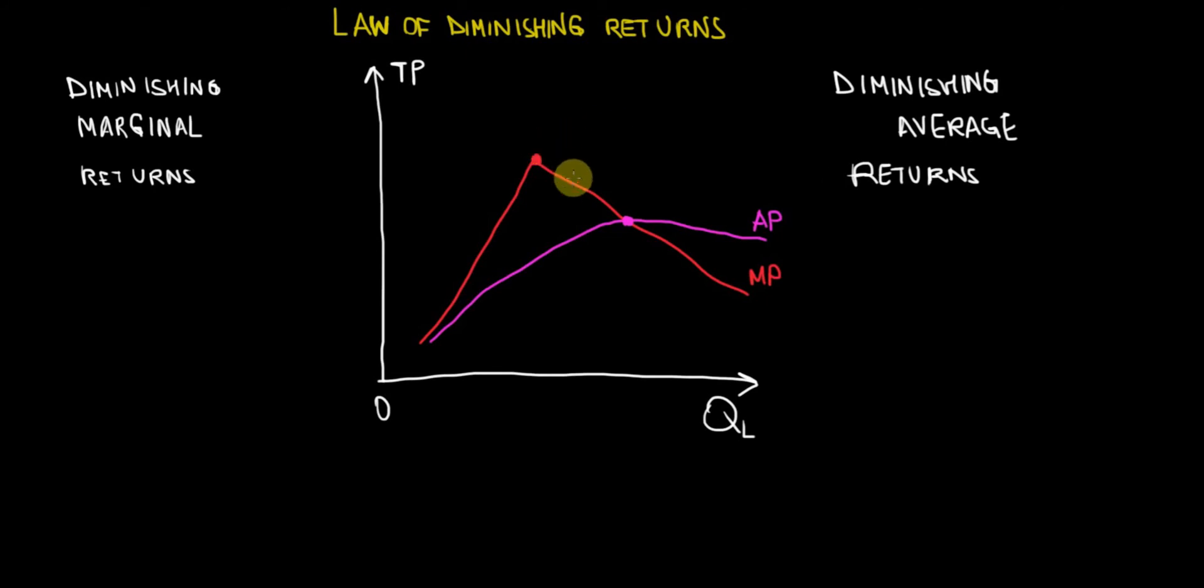So therefore the marginal product, the additional production from every additional worker, starts falling beyond a certain point, which is called the diminishing marginal returns.